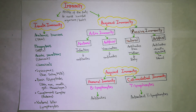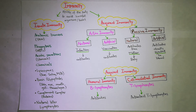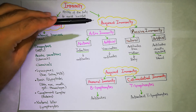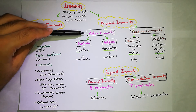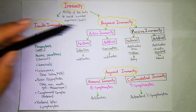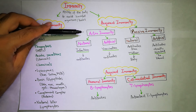Now, acquired immunity. The body has acquired ability but it is actively used when there is an external stimulus. There are two types of acquired immunity: one is active immunity and the other is passive immunity.